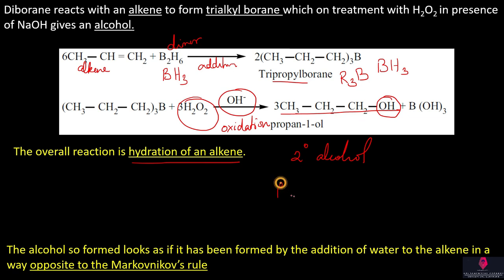But in the hydroboration method, the major product is propanol — 1-propanol. So the product is a primary alcohol. This reaction gives a primary alcohol, which is the anti-Markovnikov product.